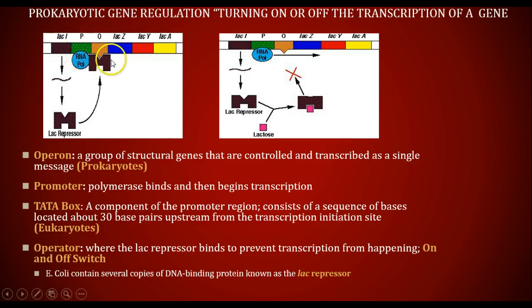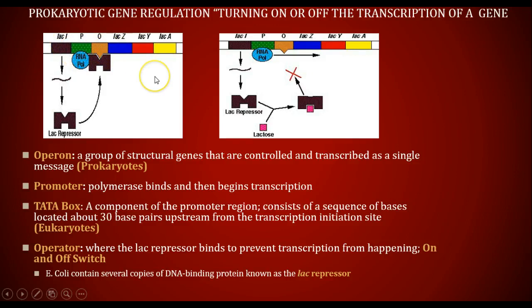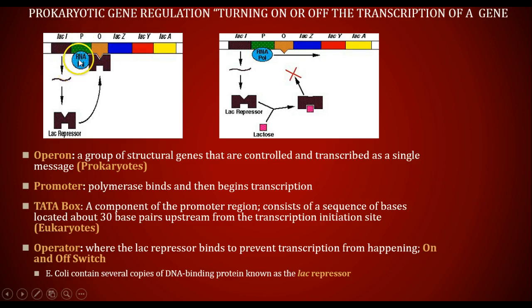Within that promoter region is something called the TATA box. It's a component within the promoter region that consists of sequences of adenine and thymine bases — thymine, adenine, thymine, adenine, thymine, adenine — and it keeps going. If you think of this as a landing strip for an airplane, the airplane is going to look for the lights that light up the landing strip. The lights happen to be thymine and adenine in this case, lining the promoter region. That just tells the polymerase where to bind.